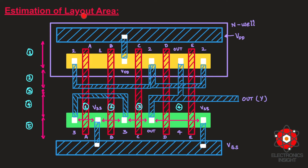In estimating layout area we identify two important things: horizontal tracks, which give the total length of the layout, and vertical tracks, which give the width. Since we have equal contacts in both layers, I'll take the n-diffusion layer. The procedure for counting horizontal tracks is: between two adjacent contacts, count one track. Counting the adjacent contacts gives one, two, three, four — so there are four horizontal tracks in this layout.